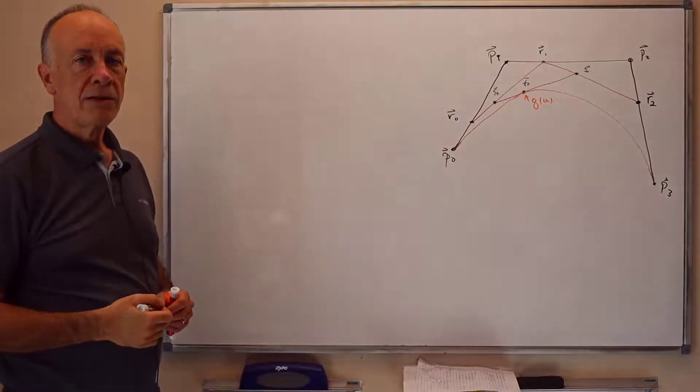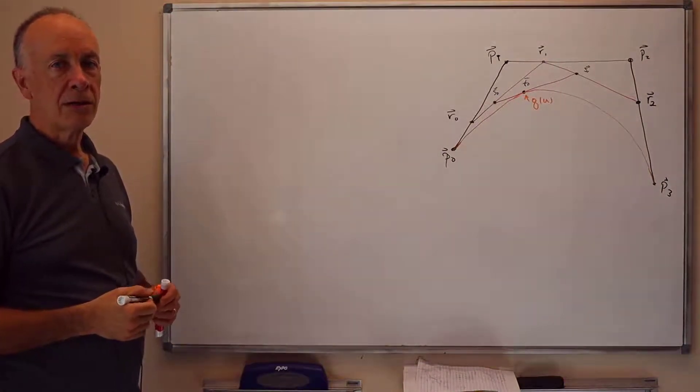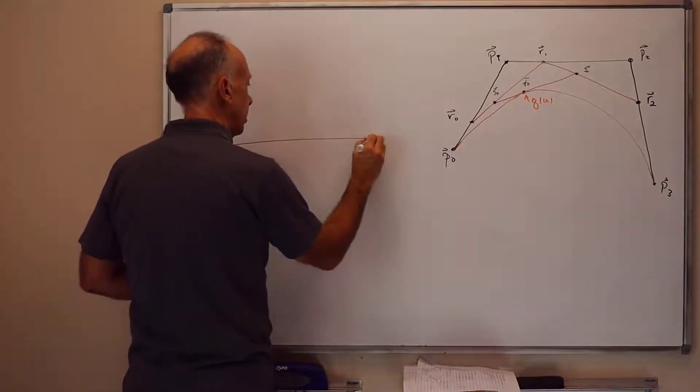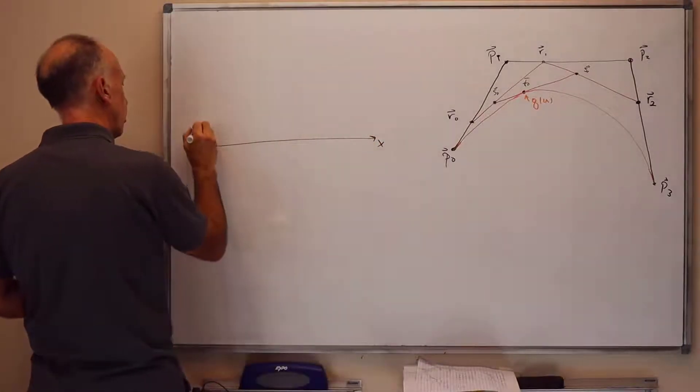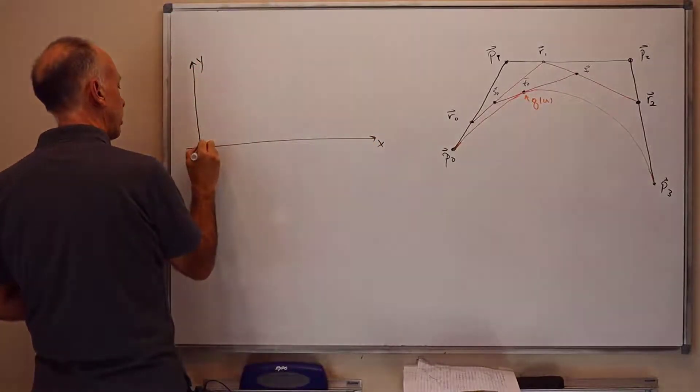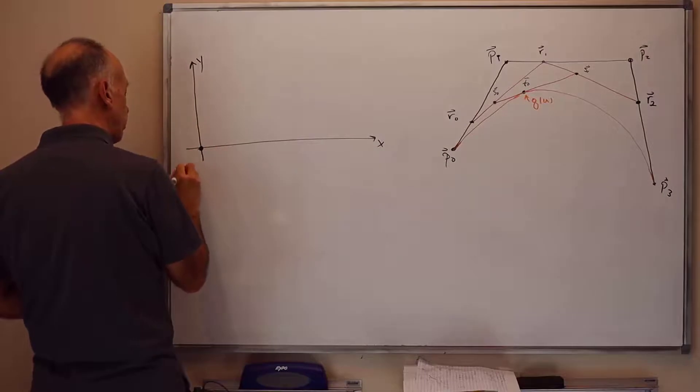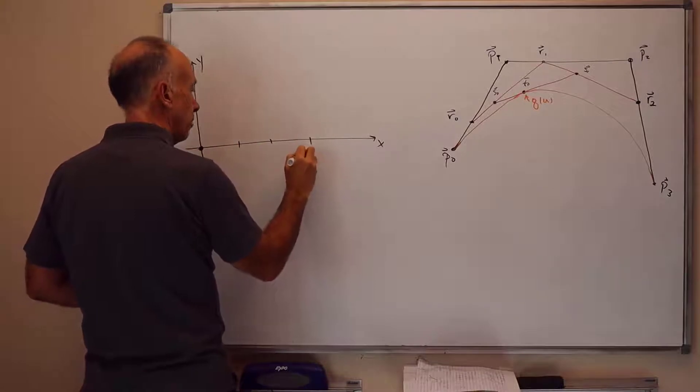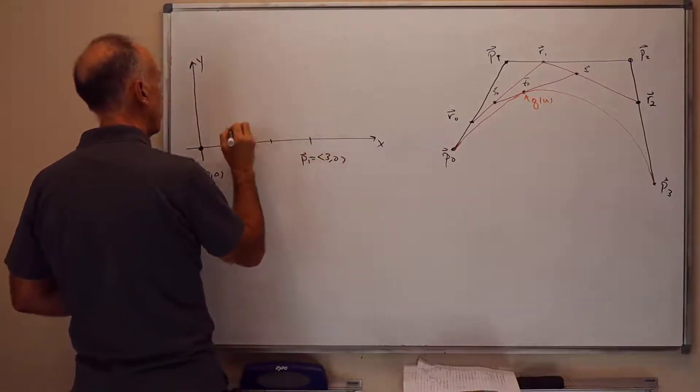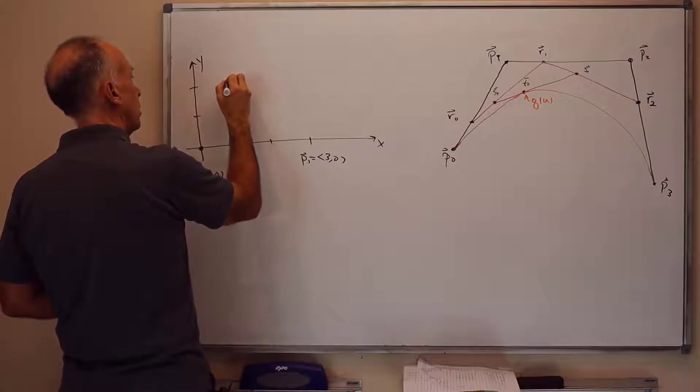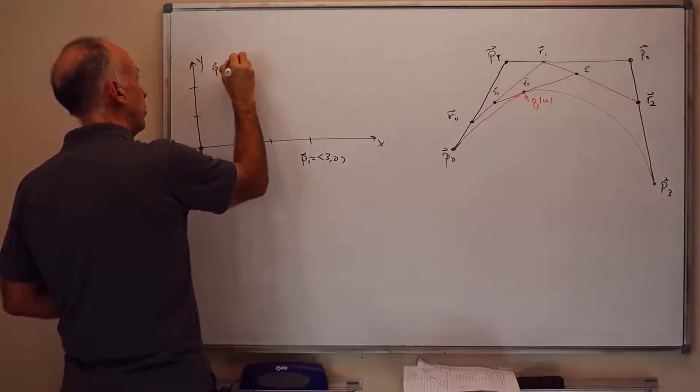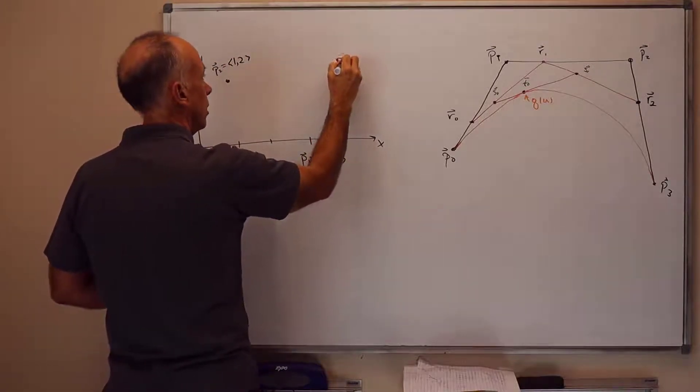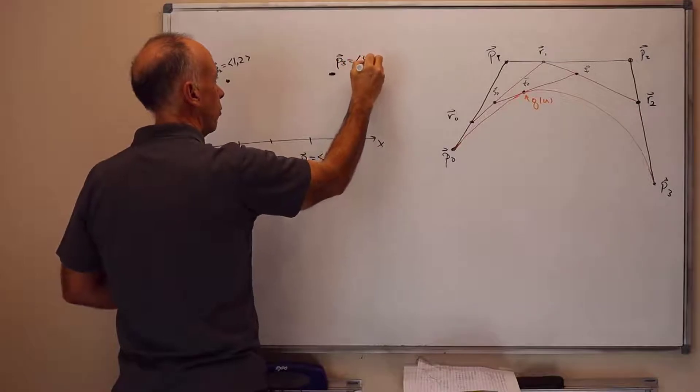For the example, I'm going to use the same example that was used in the second part of the previous video on particle motion. For this, we had control points for particle motion on the XY plane. We started with P0 was (0,0), P1 was (3,0), P2 was (1,2), and P3 is (4,2).